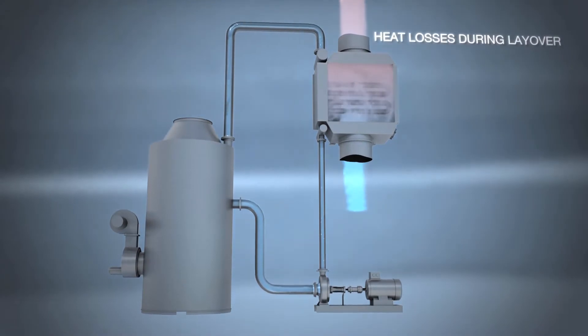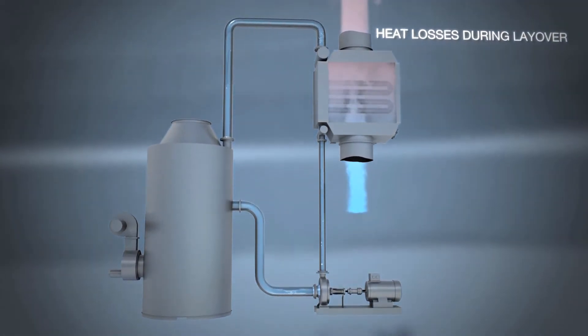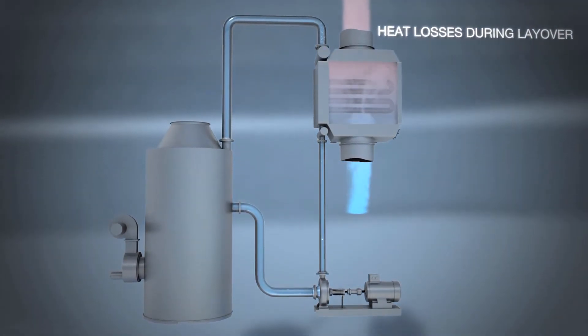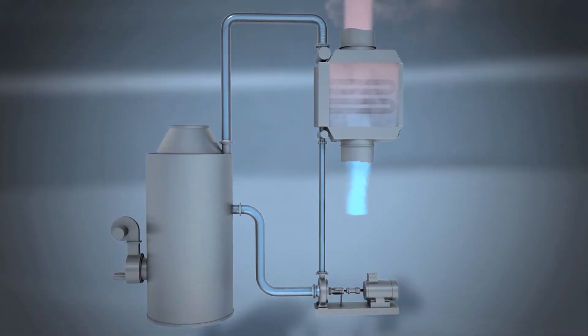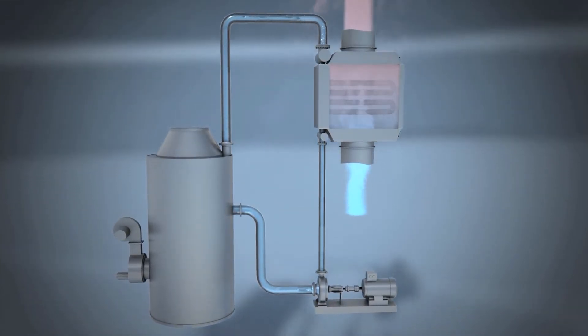Additionally, continuously running circulation water pumps enable heat losses in the exhaust gas boiler. These significant losses must be compensated for by the oil or gas fired boilers.